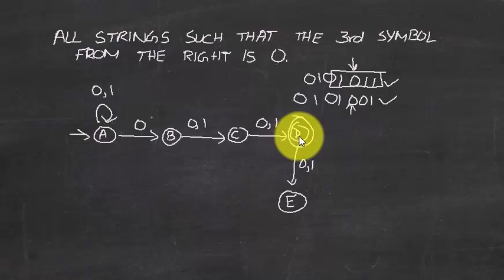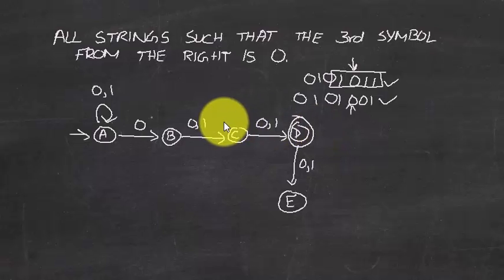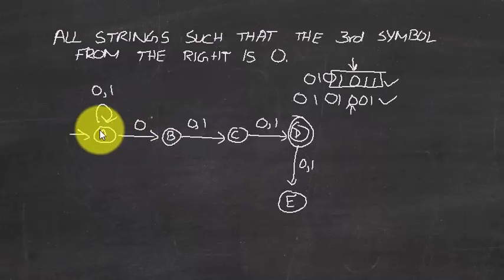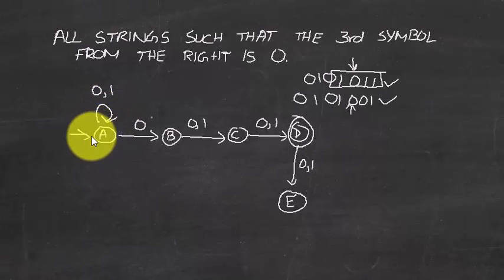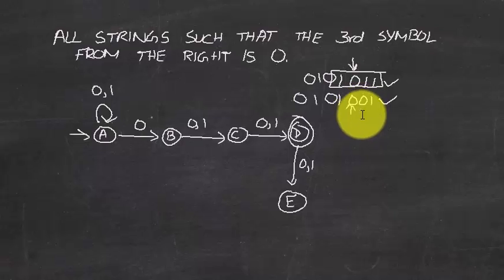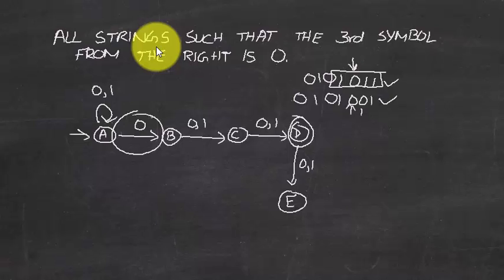After identifying the third-from-right zero, when we encounter zero or one we go to the next state, and on the next zero or one we reach the final accepting state. This is really ambiguous compared to a DFA. In an NFA you can stay in the start state as long as you want, and as soon as you get the third symbol from the right, you advance through the remaining states.